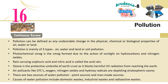Continuous Review: Pollution can be defined as any undesirable change in the physical, chemical or biological properties of air, water or land. Pollution is mainly of three types — air, water, and land or soil pollution. Photochemical smog is formed due to the action of sunlight on hydrocarbons and nitrogen oxides. Rain carrying sulfuric acid and nitric acid is called acid rain. Ozone is the protective umbrella of the Earth as it blocks harmful UV radiation from reaching the Earth. Air pollutants like CFCs, oxygen, nitrogen oxides and hydroxy radicals are depleting stratospheric ozone. There are two sources of water pollution — point sources and diffused sources. Causes of water pollution include domestic wastes, industrial wastes and radioactive wastes.